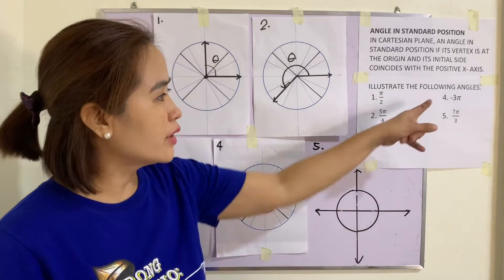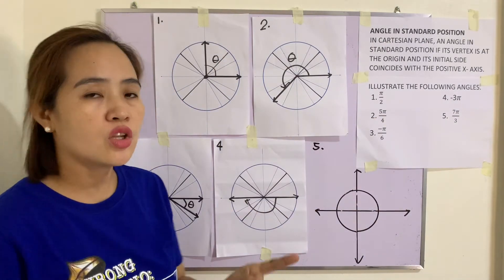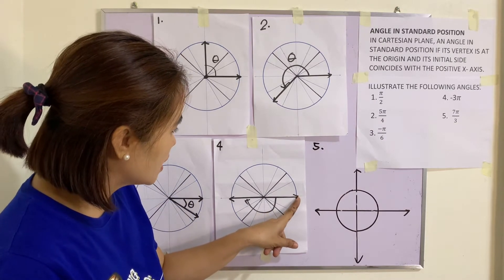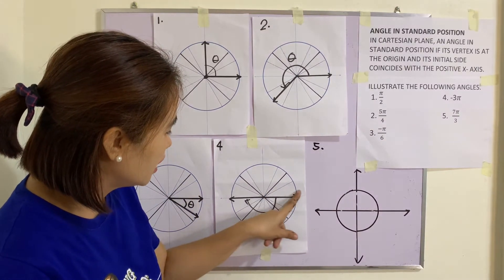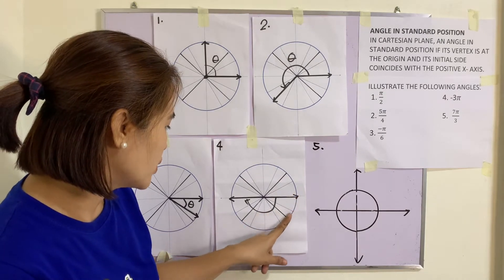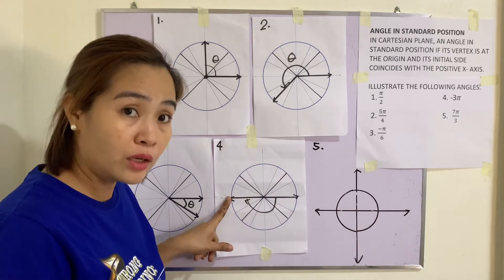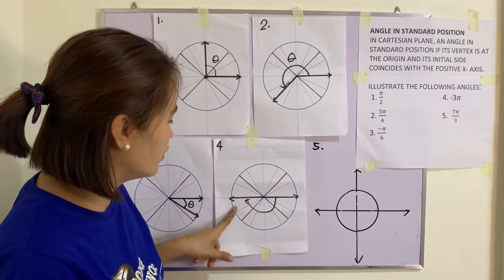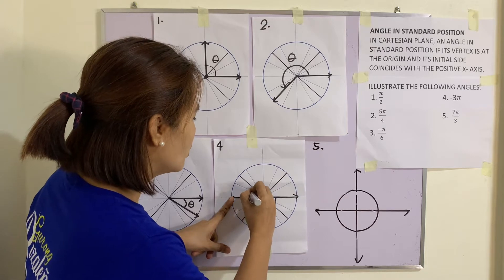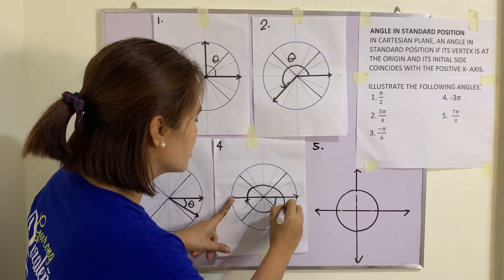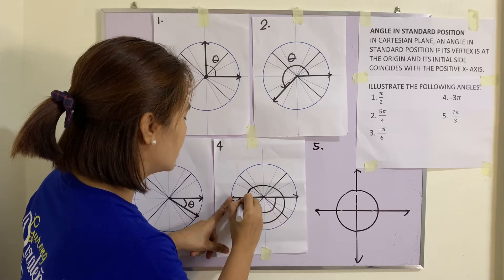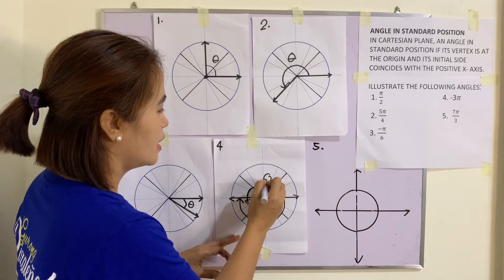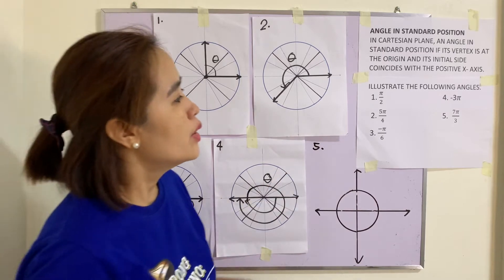Example number four: we have -3π. The rotation is clockwise. Starting from the initial side: -π, -2π, and then -3π — that is one complete turn and then back again. This is the angle -3π.